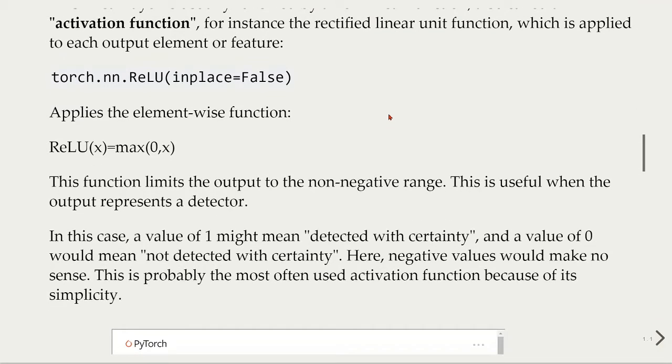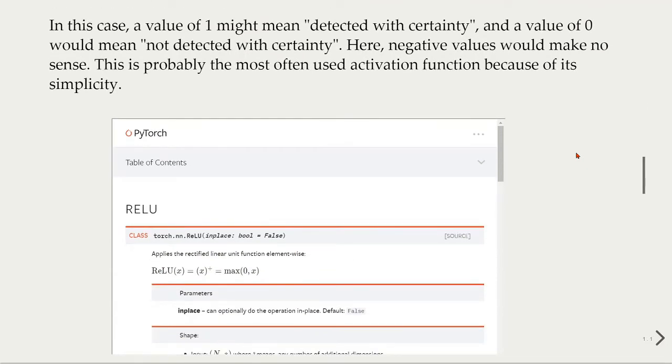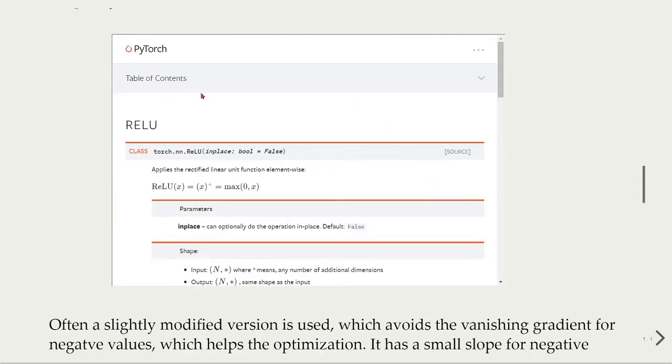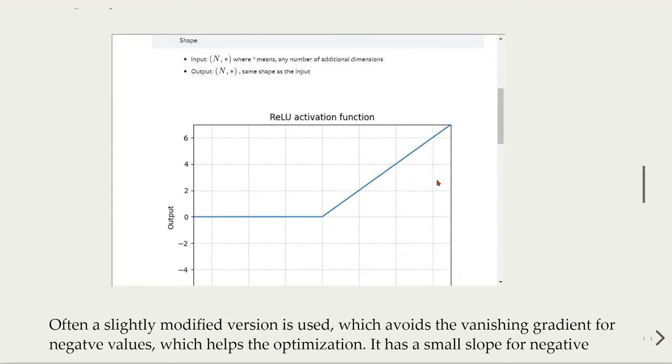In this case, a value of 1 might mean detected with certainty, and a value of 0 would mean not detected with certainty. Here, negative values would make no sense. This is probably the most often used activation function because of its simplicity. In PyTorch documentation, you can also take a look at the ReLU, and it applies this rectified linear unit function element-wise given here.